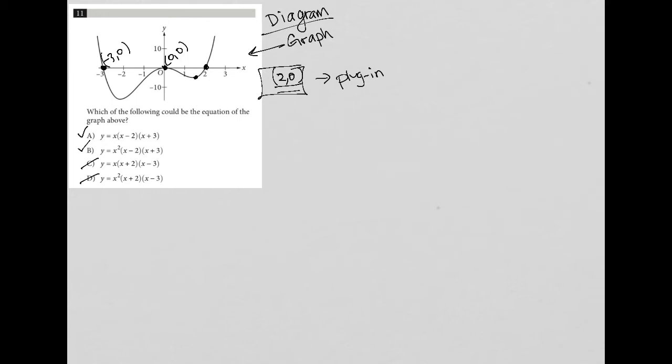I can do the same thing with negative 3, 0, but you'll see that both A and B have x plus 3, which means plugging negative 3 in for x will give us y equals 0 for both cases. So there's nothing else I can cross out. And then also using the origin, 0, 0, plugging in 0 for x will give us y equals 0 for both A and B because of the x's in front.